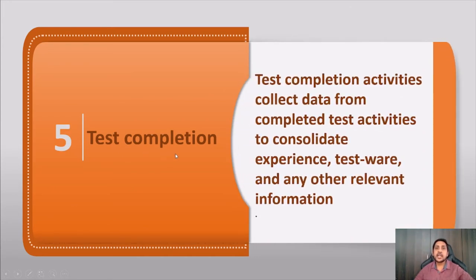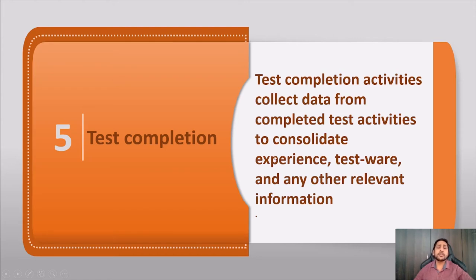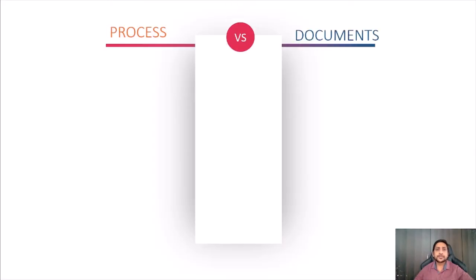Test completion is the last stage — the seventh step. Test completion activities collect data from completed test activities such as analysis, design, implementation, and execution, and consolidate experiences and any other relevant information. We have to document what went wrong during testing, what went well, what we should follow in the next release, and what we should avoid. All relevant information with respect to the testing process is documented in the completion stage.